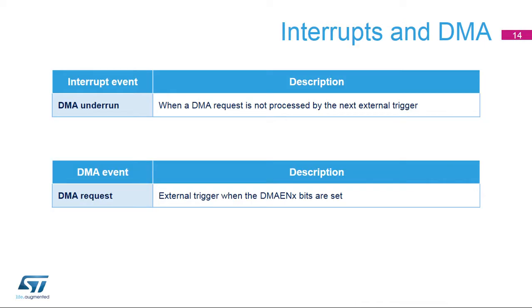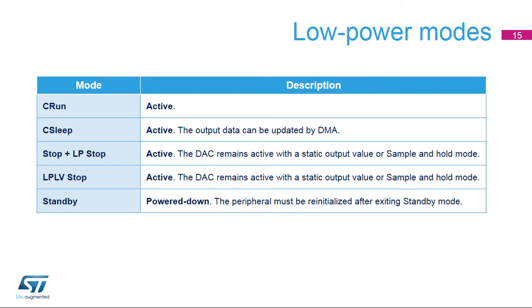The DAC can generate a DMA underrun interrupt. To transfer data from memory, a DMA request can be generated. The Digital-to-Analog Converter is active in the following low-power modes.